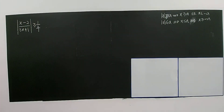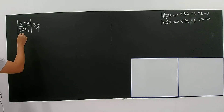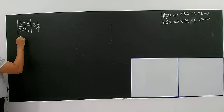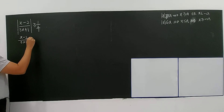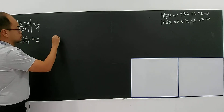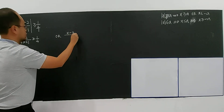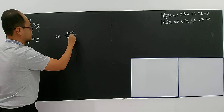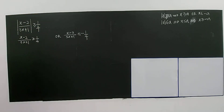So we have the modulus of (x minus 2) divided by (3x plus 1), greater than or equal to 1/4. I'm going to apply the first definition — the 'greater' definition. So you get (x minus 2) divided by (3x plus 1) greater than or equal to 1/4, or (x minus 2) divided by (3x plus 1) less than or equal to negative 1/4.